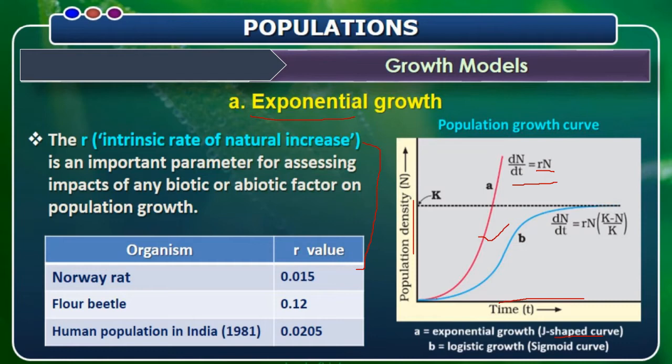When we consider exponential growth, as resources increase the population increases and shows a J-shaped curve. The formula for the J-shaped curve relates the rate of change in population — dN/dt — to the intrinsic rate R. As R increases, population growth also increases. There is also a second graph — B — which represents logistic growth shown as a sigmoid curve, described by the formula dN/dt = RN × (K − N)/K. I will explain this formula in the next step.